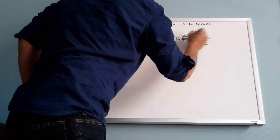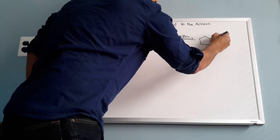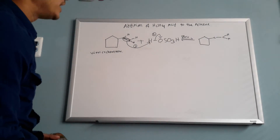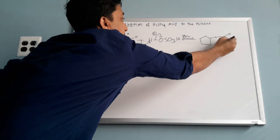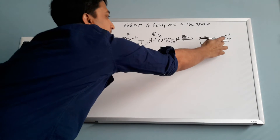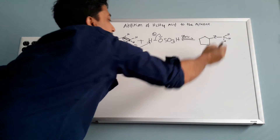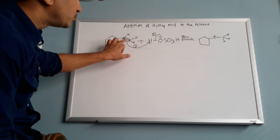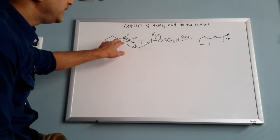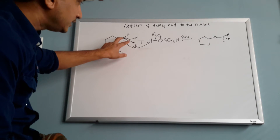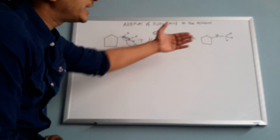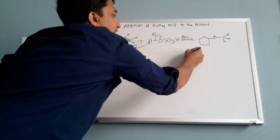This is the slow step. This is my carbon, and the mechanism says the hydrogen is going to go to the carbon that has more hydrogens — hydrogen comes in here. When this bond gets the hydrogen, this carbon becomes positively charged. This pi bond with two electrons grabs the hydrogen, and this other carbon gets the plus sign — a carbocation.